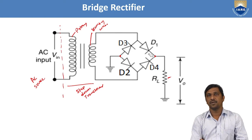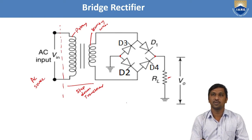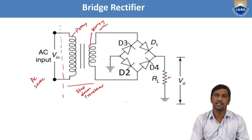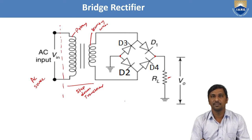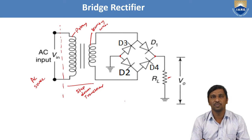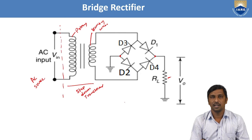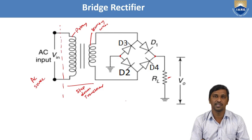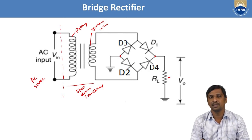Now we need to analyze how the bridge rectifier processes the AC signal to pulsating DC and allows both peaks — positive and negative. Before going to that, we need to identify the equivalent models of the diodes — meaning what is the behavior of the diodes with respect to the biasing condition.